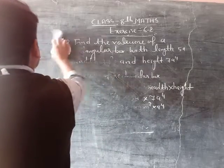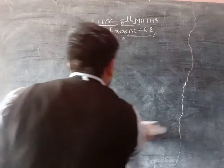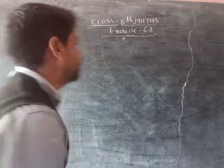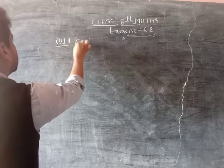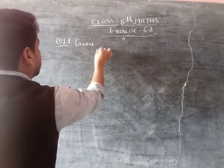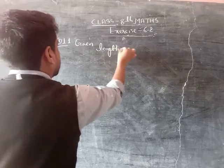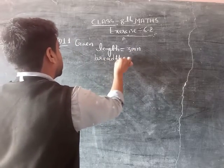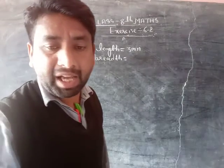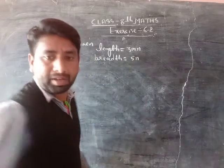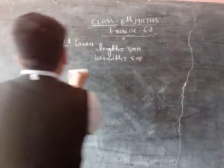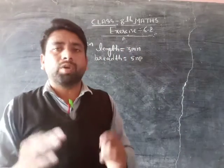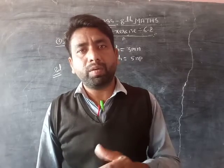Given: length is 3mn and breadth is 5np. We need to find the area of the rectangle. We know that the area of a rectangle equals length into breadth.